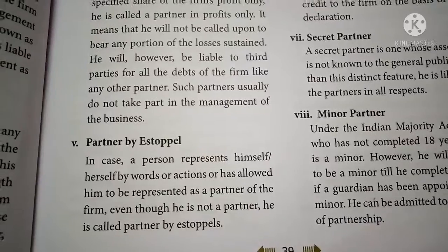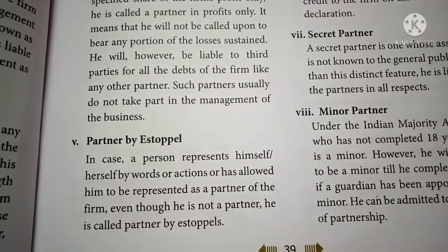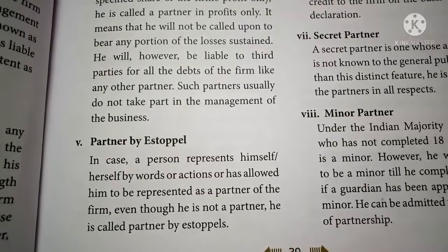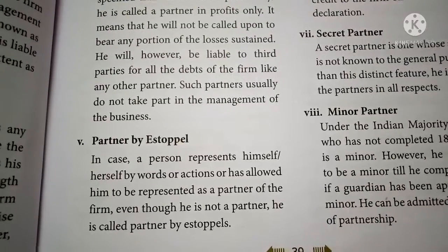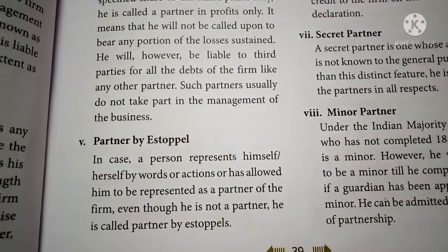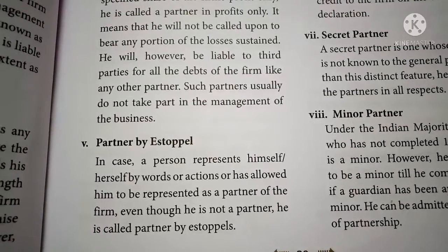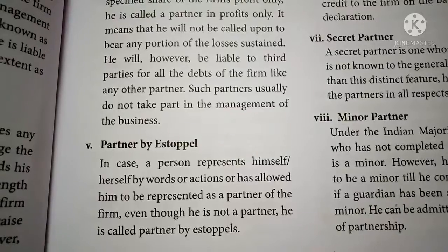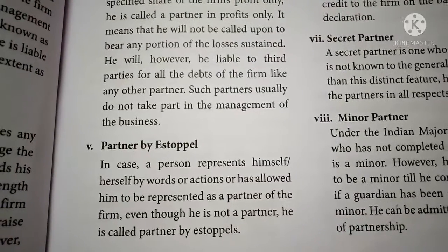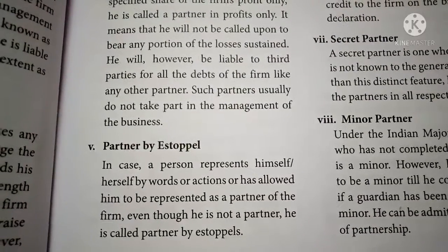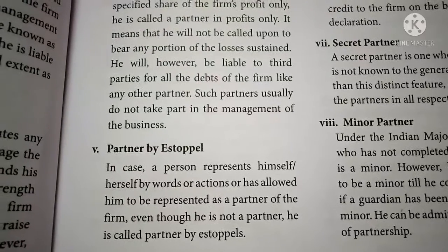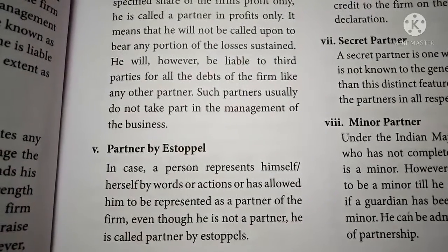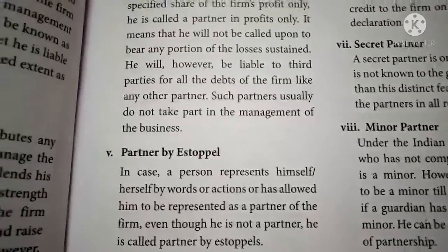Partner by estoppel: if a person represents himself or herself by words or actions, or has allowed himself to be represented as a partner of the firm — even though he is not a partner — he is called a partner by estoppel. This is a person who is not a partner in the firm but causes outsiders to believe him to be a partner for any legal purposes.